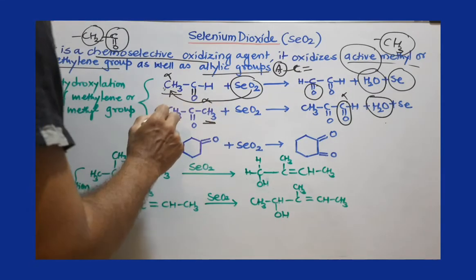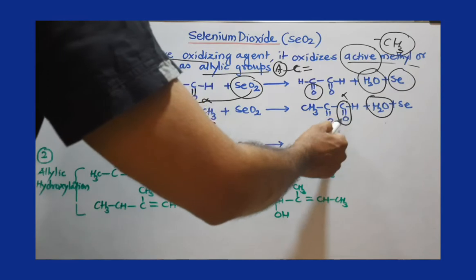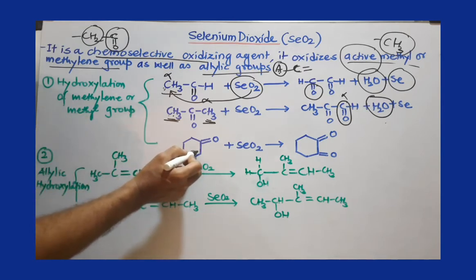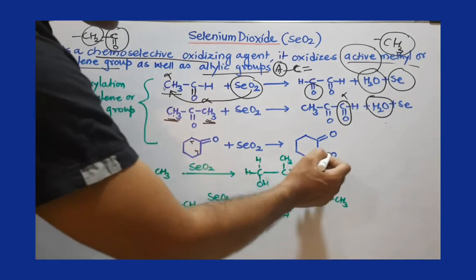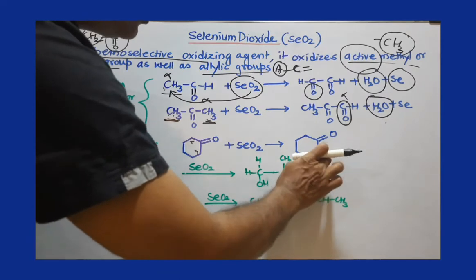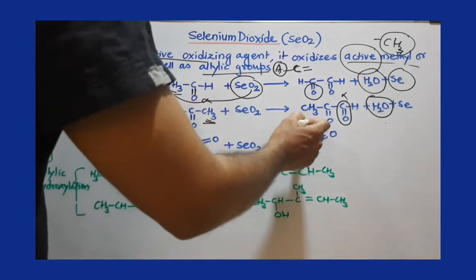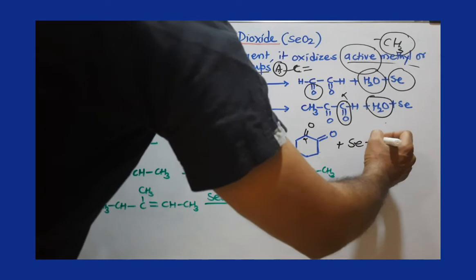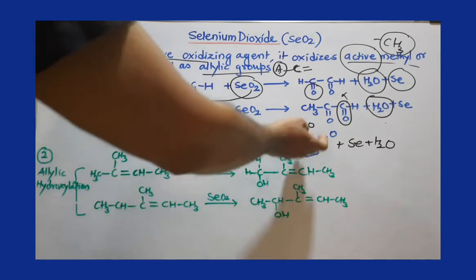Similarly, if it is cyclohexanone, you select the alpha carbon — either of the two equivalent positions — and join oxygen with two bonds to introduce a carbonyl group. One oxygen is joined with two bonds at the alpha position, along with formation of selenium and water. This oxidation is very different from using KMnO4, where it is very difficult to stop the reaction or introduce oxygen selectively at the alpha carbon.